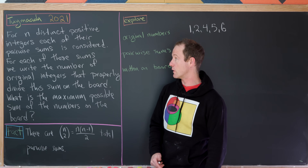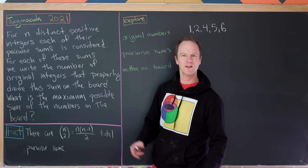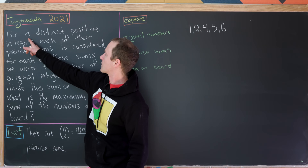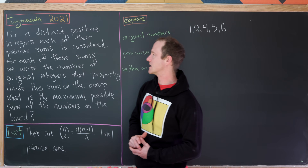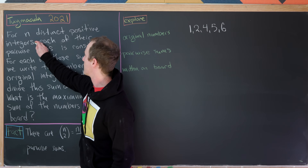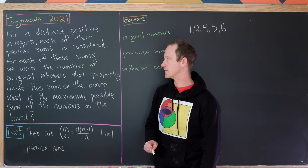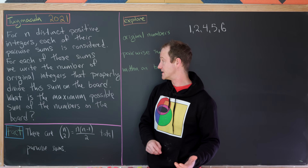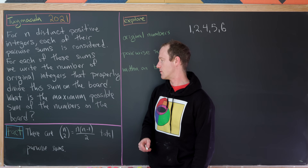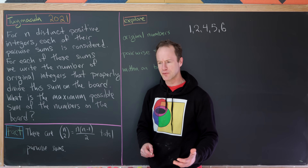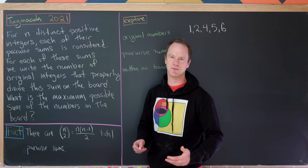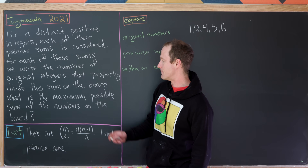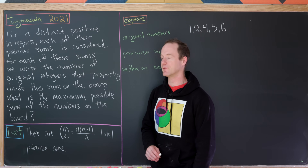Today I've got a pretty interesting problem to show everyone. For n distinct positive integers, each of their pairwise sums is considered. For each of these sums, we write the number of the original integers that properly divide this sum on the board. By properly divide, I mean it divides but is not equal to. Our final goal is to determine the maximum possible sum of the numbers we've written on the board.